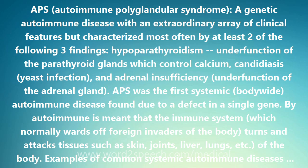Examples of common systemic autoimmune diseases include rheumatoid arthritis, systemic lupus erythematosus, diabetes mellitus, Sjogren syndrome, scleroderma, Goodpasture syndrome, vitiligo, Addison disease, thyroiditis, and many others.